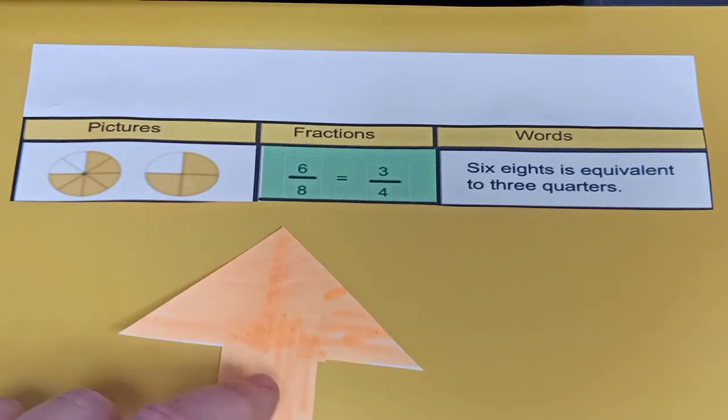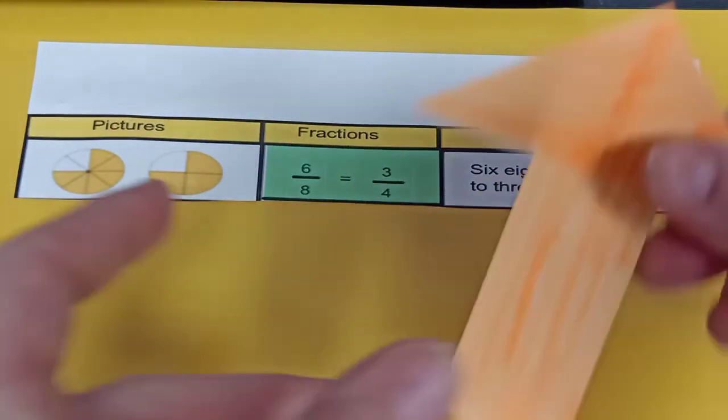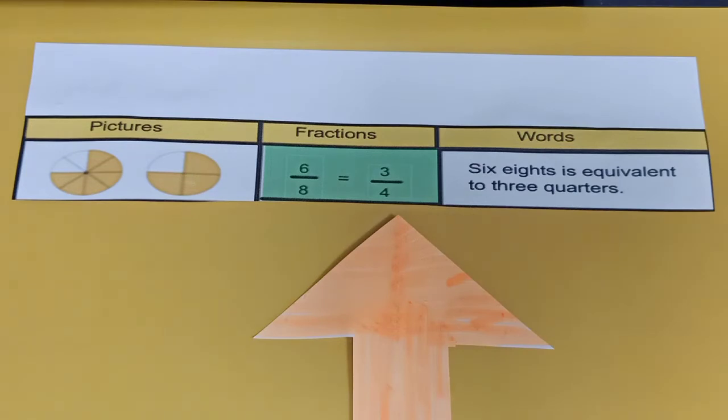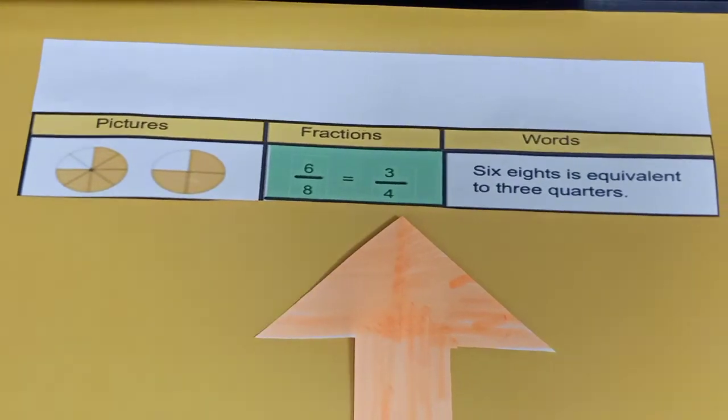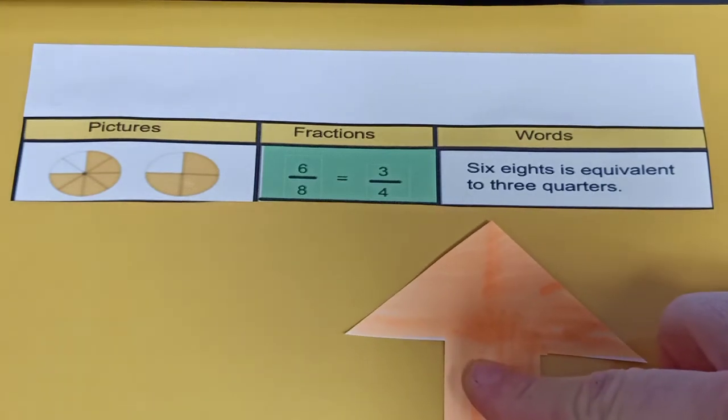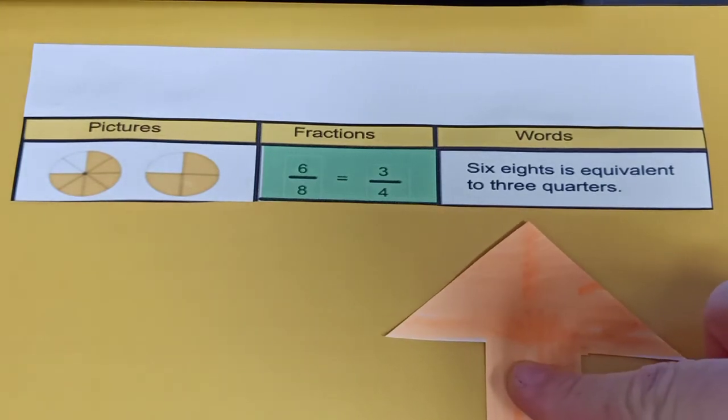You can see the numbers written over here: 6 over 8 is equal to 3 over 4. And if you're doing it in words, you would say 6 eighths is equivalent to 3 quarters.